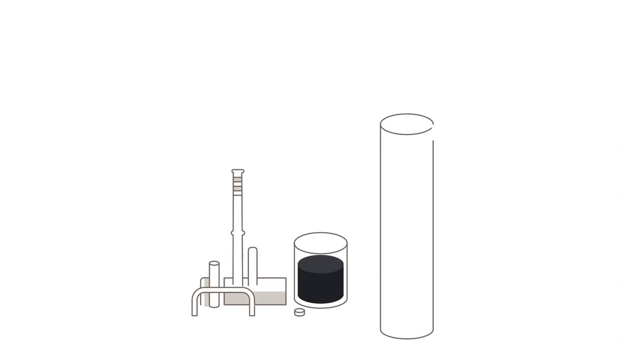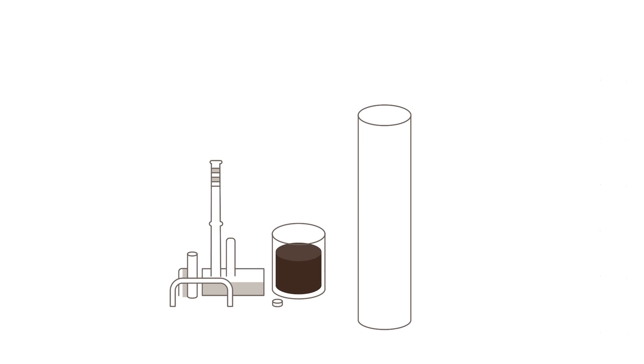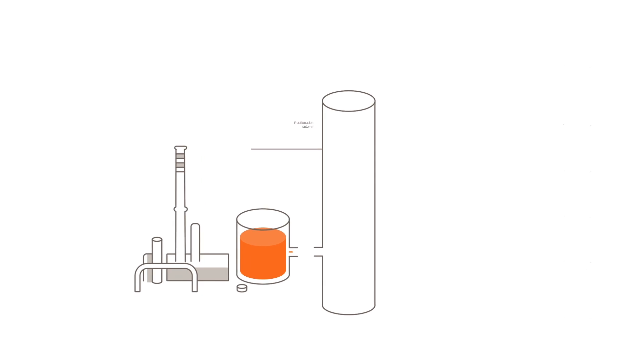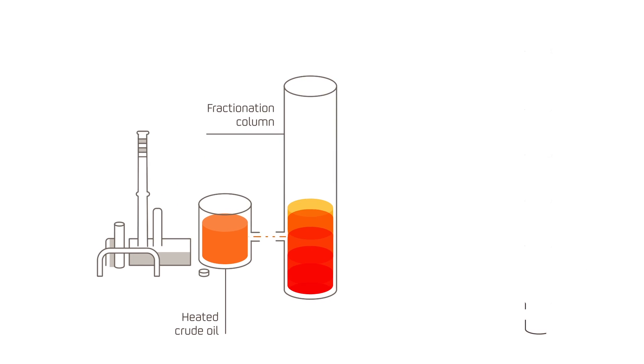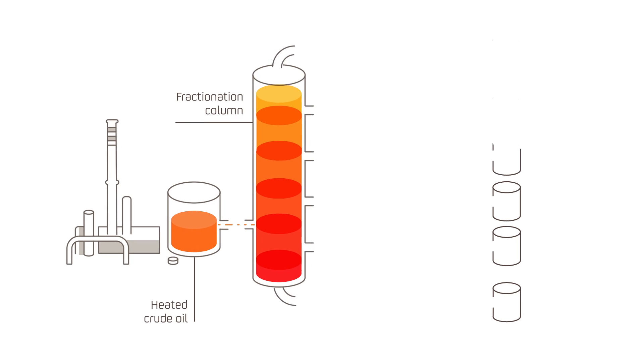The oil is heated in an oven until it reaches 370 degrees and is channeled to a distillation column where different products are separated depending on the volatility of their components.